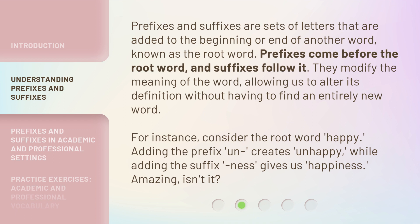For instance, consider the root word 'happy.' Adding the prefix 'un' creates 'unhappy,' while adding the suffix 'ness' gives us 'happiness.' Amazing, isn't it?